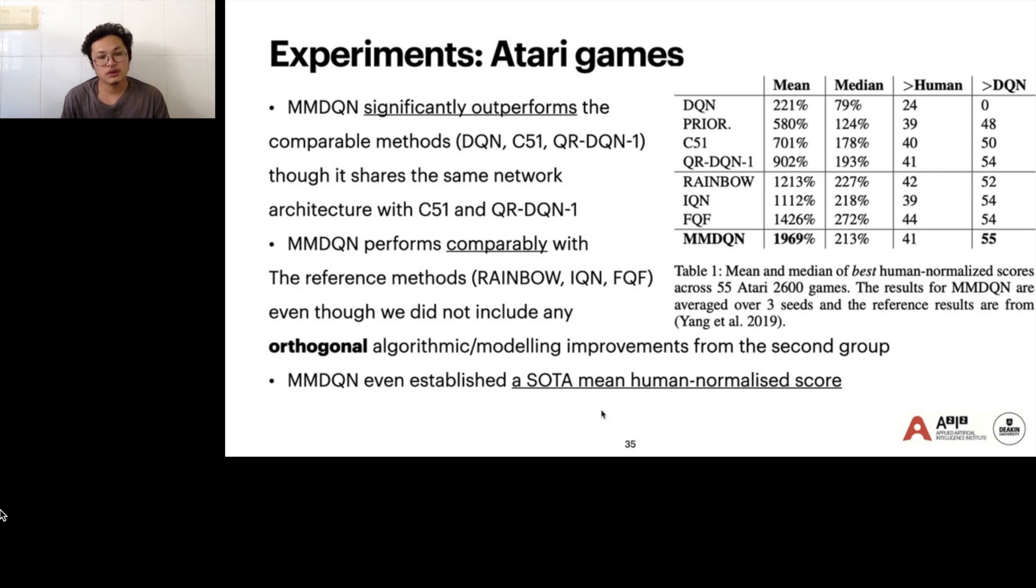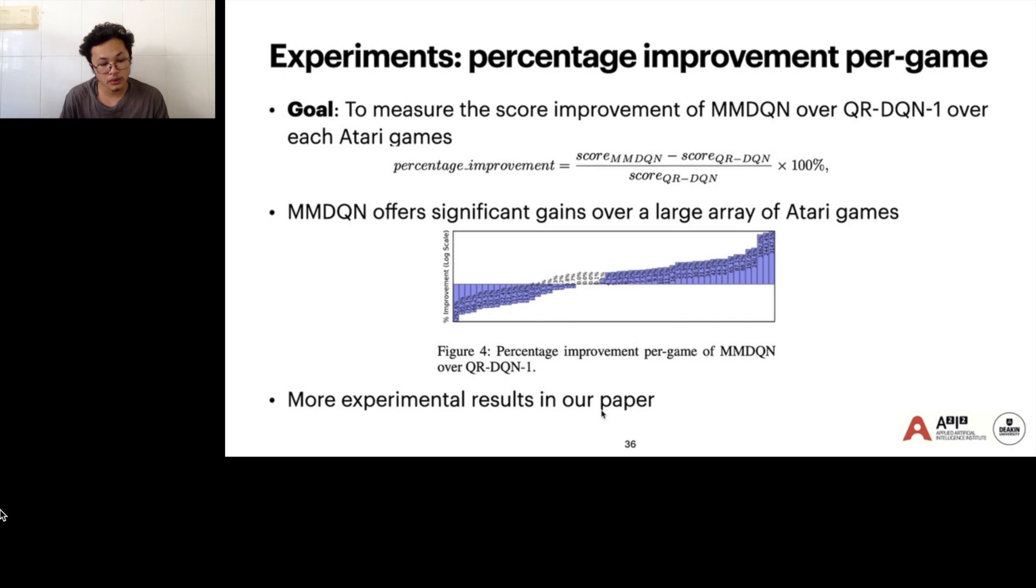Here is the main result on table 1. You can see that MMDQN significantly outperforms the comparable methods, though it shares exactly the same basic network architecture with C51 and QRDQN. But MMDQN performs comparably with the reference methods like Rainbow, IQN, and FQF, even though our methods did not include any orthogonal algorithmic and modeling improvements from the second group. MMDQN even established the state-of-the-art mean and median normalized score in this experiment. Here we get another experimental result to measure the score improvement of MMDQN over QRDQN in each Atari game. MMDQN offers significant gains over a large array of Atari games.